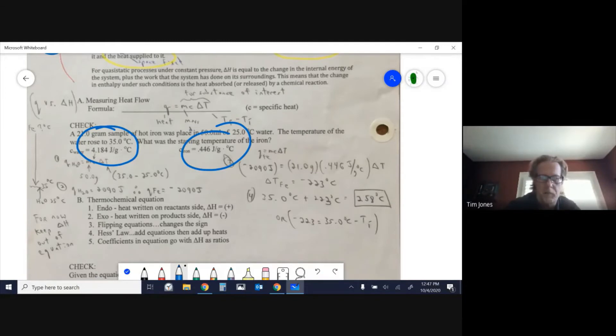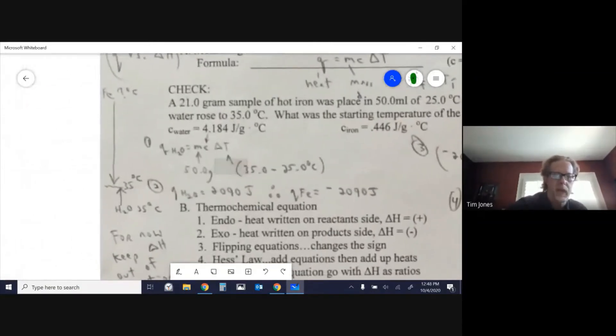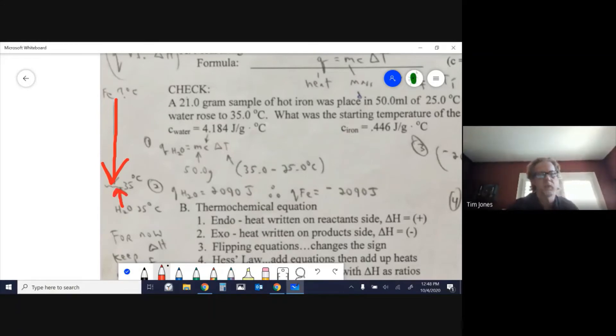Take a look at this problem: A 21 gram sample of hot iron was placed in 50 milliliters of 25°C water. The temperature of the water rose to 35°C. What was the starting temperature of the iron? We have our iron cooling down from some unknown temperature and our water heating up from 25 to 35.